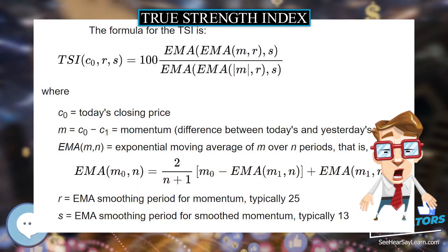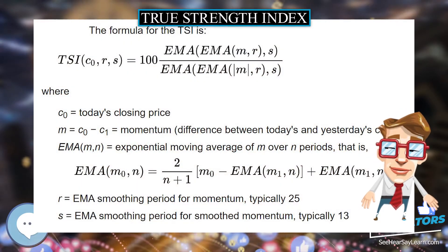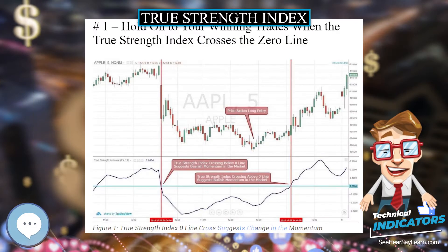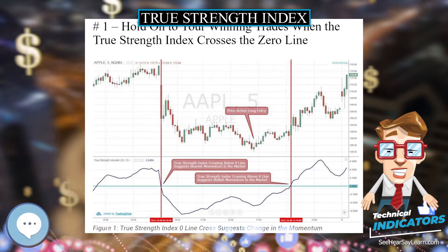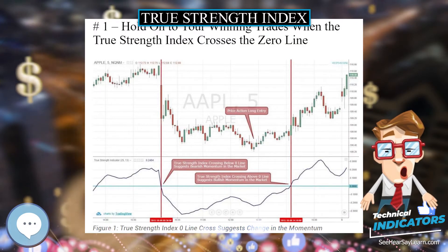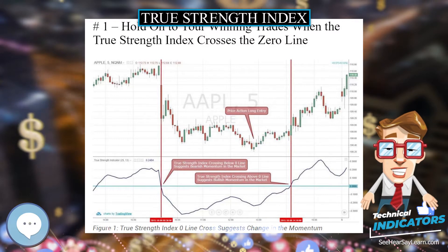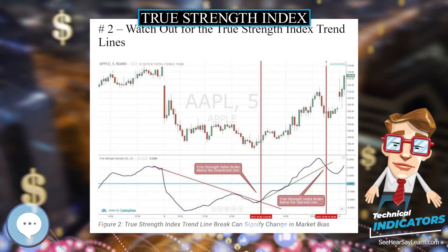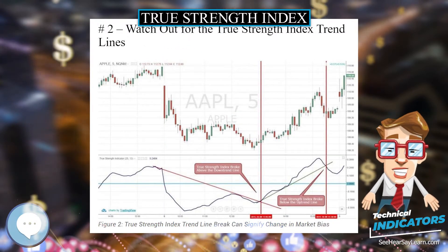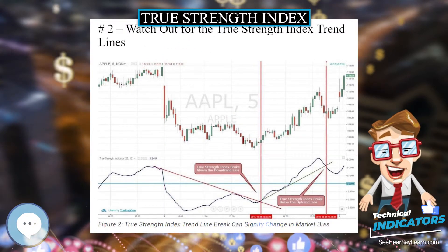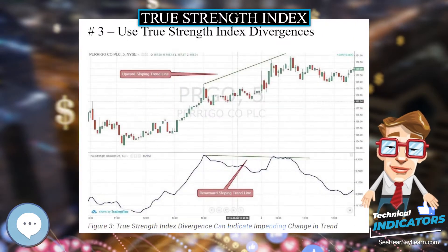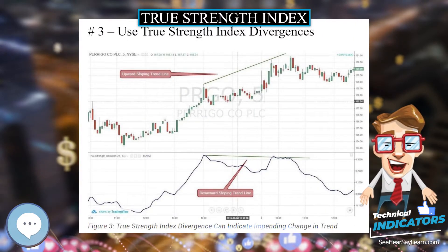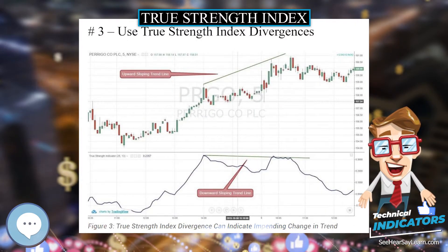The True Strength Index, TSI, is a technical indicator used in the analysis of financial markets that attempts to show both trend direction and overbought/oversold conditions. It was first published by William Blau in 1991.